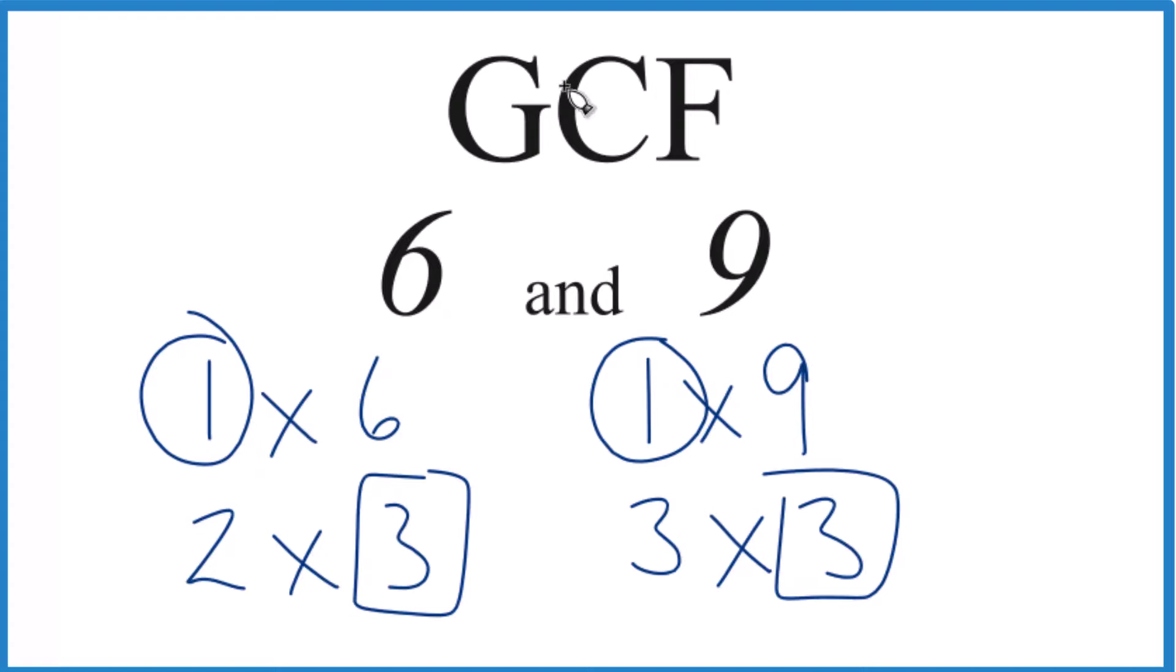So in answer to our question, the GCF for 6 and 9, that's going to be 3. You could use other methods like prime factorization to find the GCF for 6 and 9, but unless you have really big numbers, it's a pretty good technique. This is Dr. V. Thank you for watching.